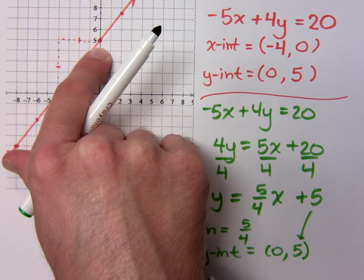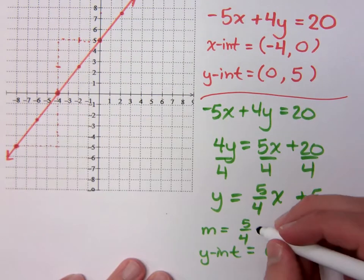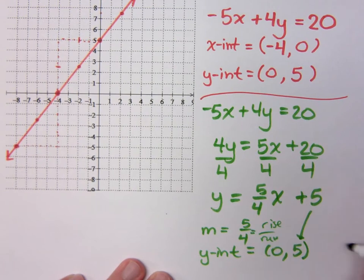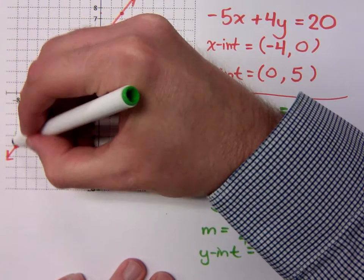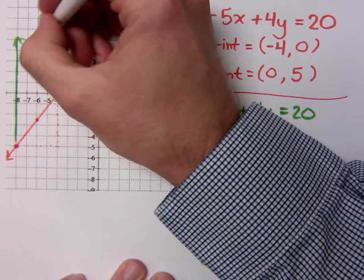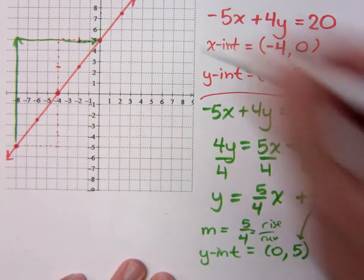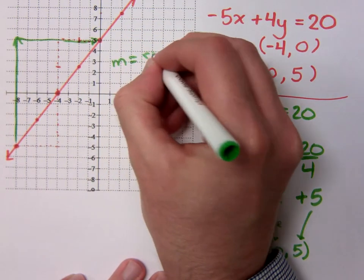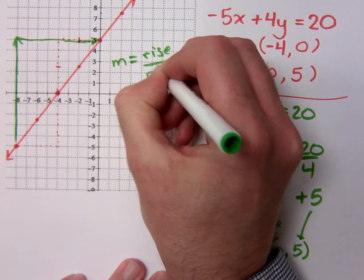So we look at this guy as rise to run. So if I would go from this point right here to that point, my slope is my rise to run.